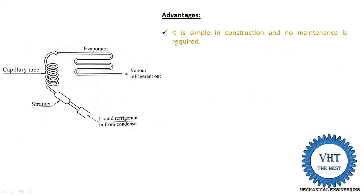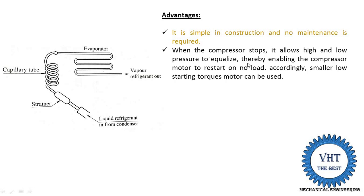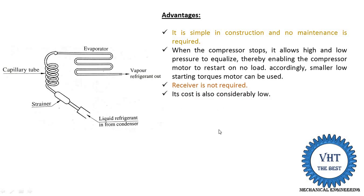The advantages of the capillary tube are: it is simple in construction, no maintenance is required, and its cost is low. When the compressor stops, it allows the high and low pressures to equalize — the high pressure refrigerant in the condenser mixes with the low pressure refrigerant in the evaporator until the same pressure is achieved. Due to this, a smaller low-starting-torque motor can be used in the compressor. Also, a receiver is not required, and the copper tube cost is considerably low.